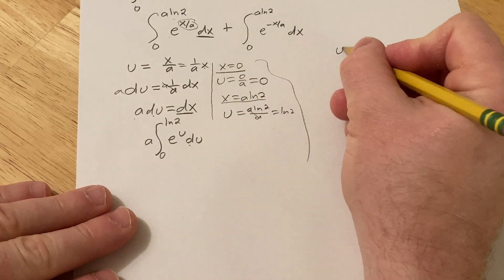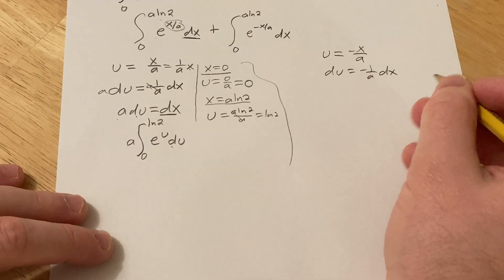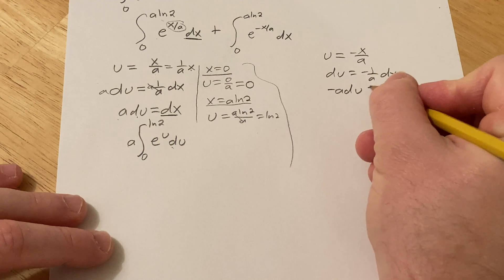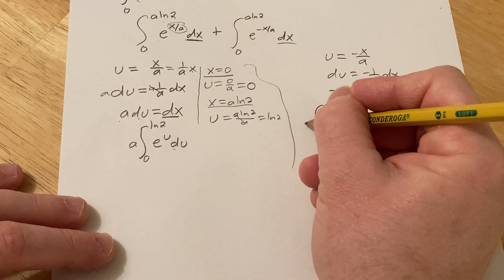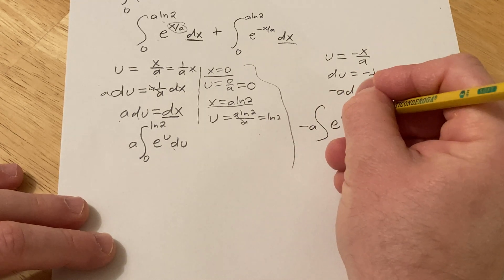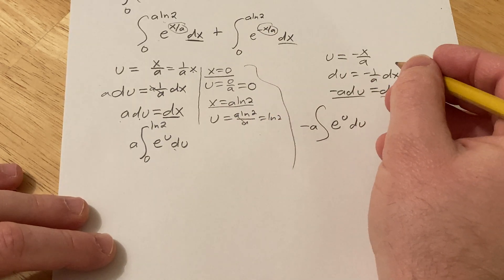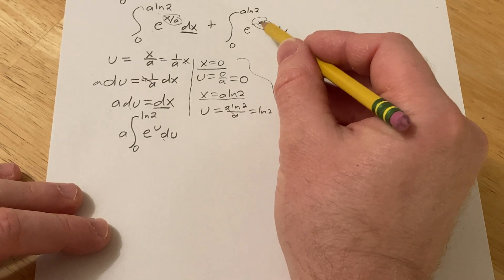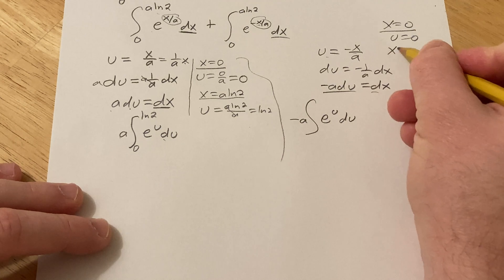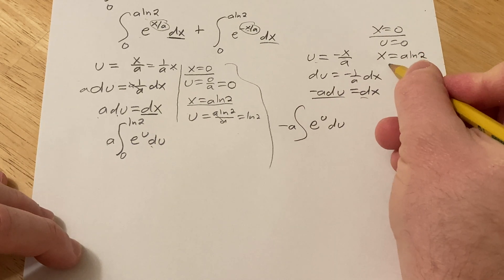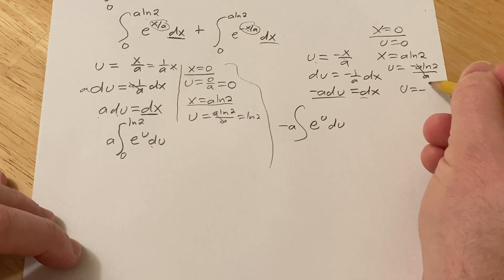Now let's do this one over here. Same thing, I'll use u again. Then du is negative 1 over a dx. Same routine, multiply by negative a. We'll make our substitutions. dx is going to be negative a, and here we have e to the u, this is du. The limits are going to be different because this is a different substitution. When x is 0, u is also 0. But when x is a ln2, u is going to be negative a ln2 over a. The a's cancel, so u is negative ln2.